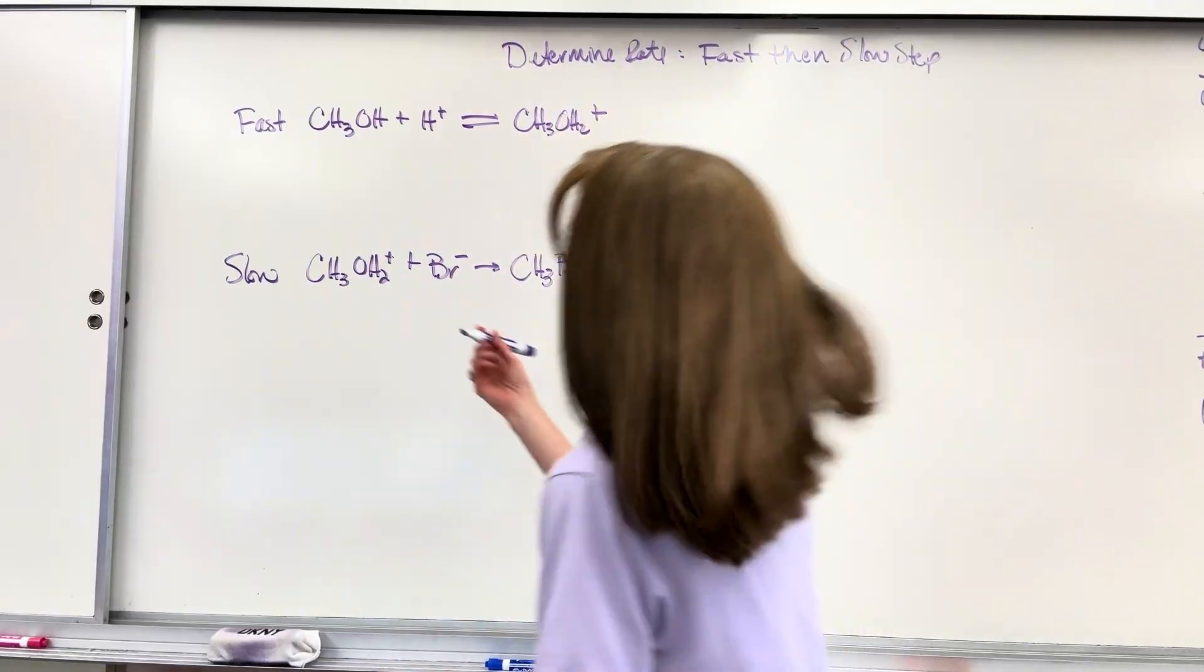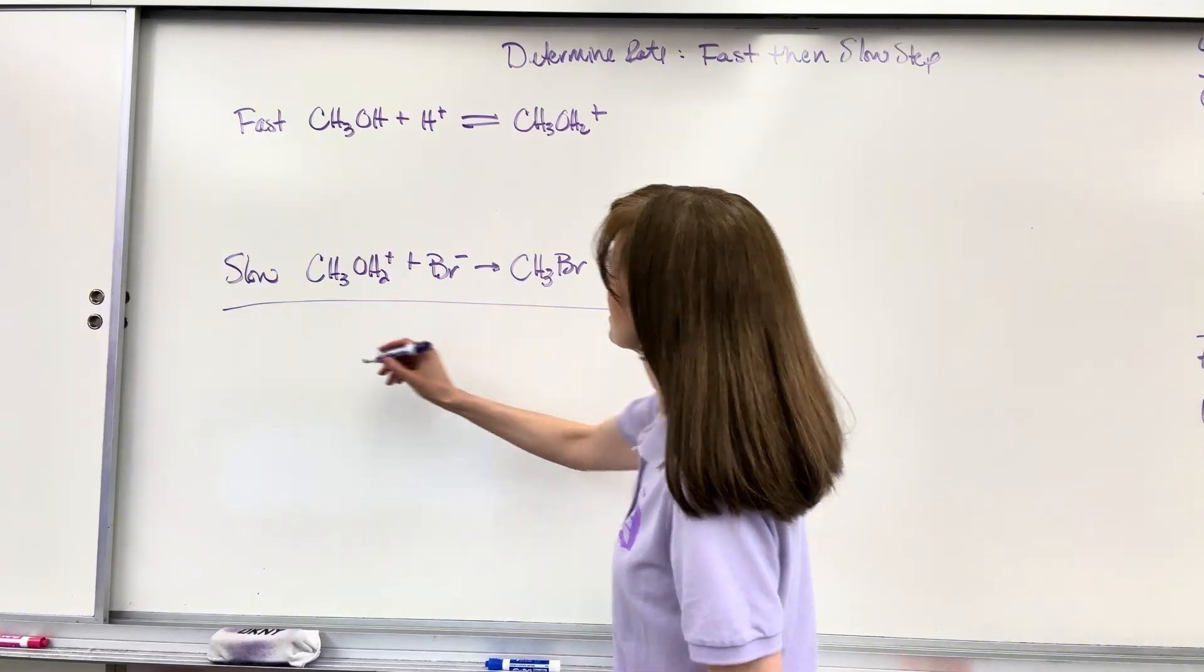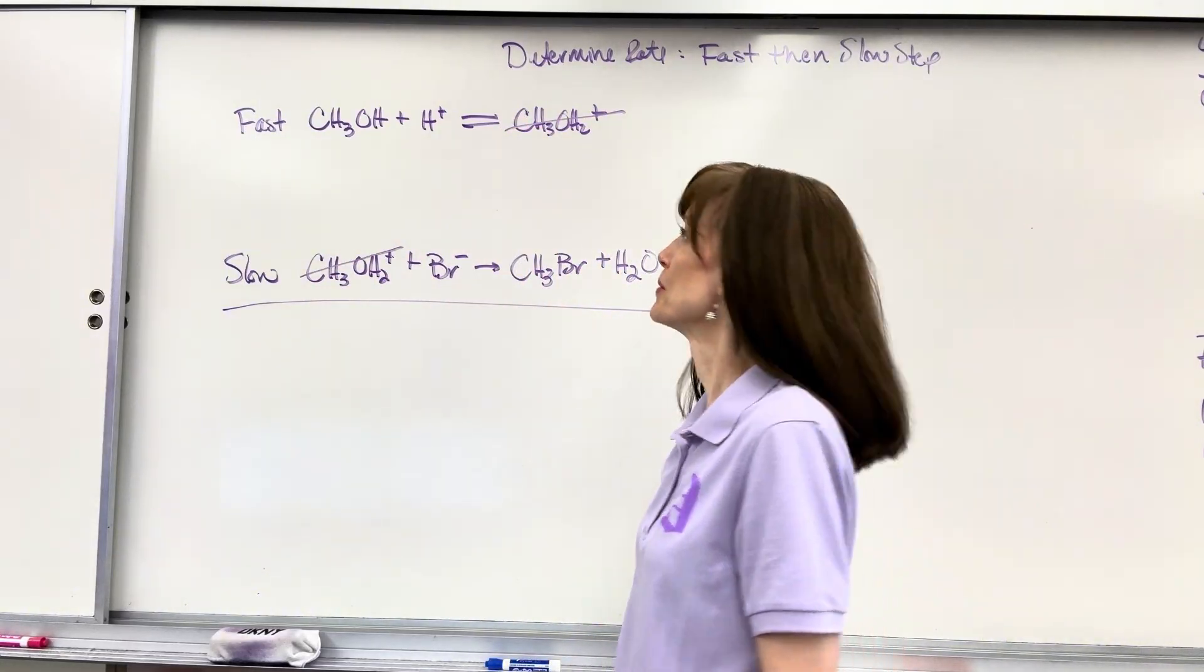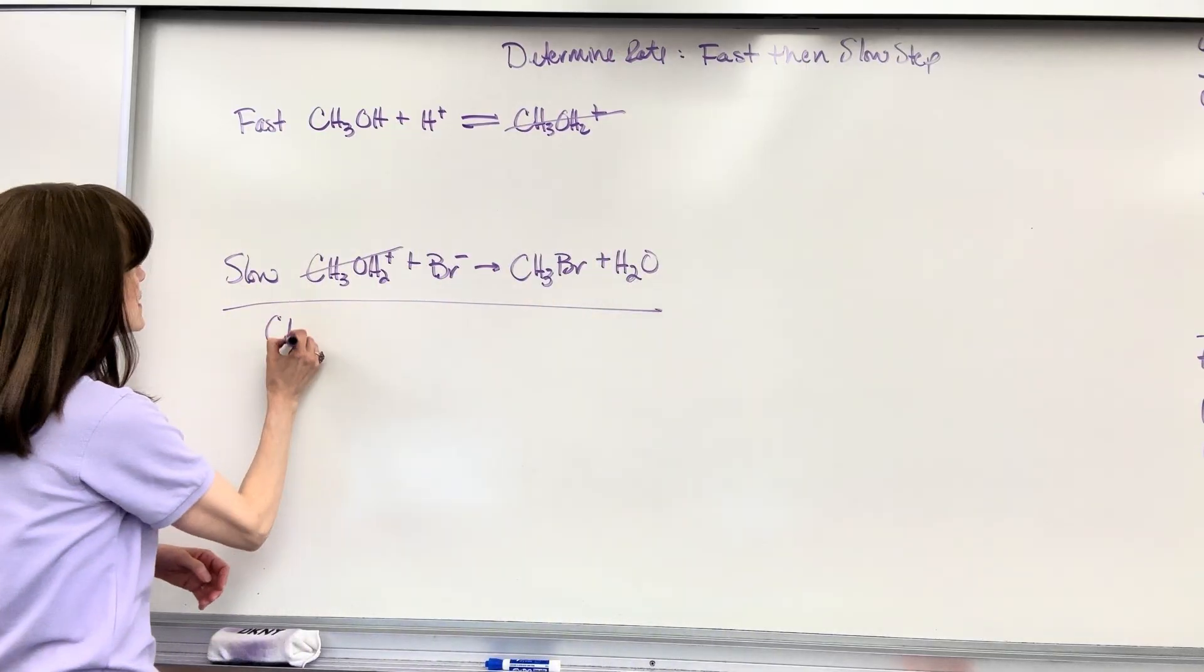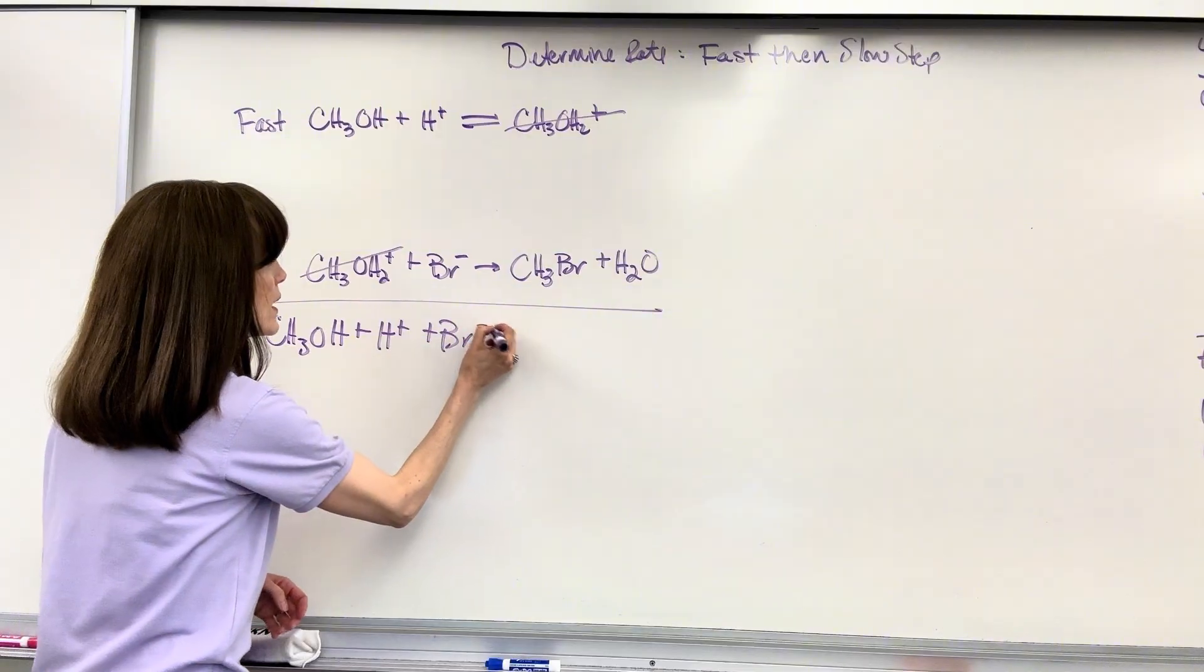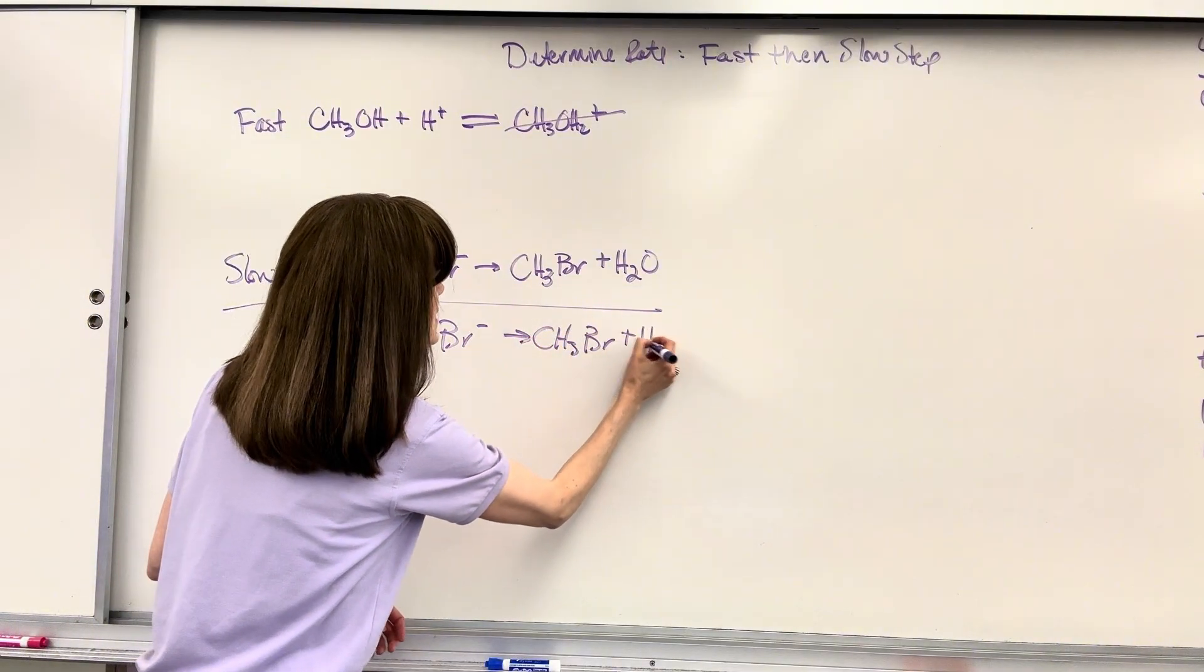Number one, add the two reaction mechanisms. Notice that my CH3OH2+ is going to cancel. We will be left with CH3OH plus H+ plus Br- yields CH3Br plus H2O.